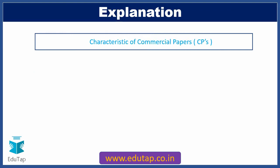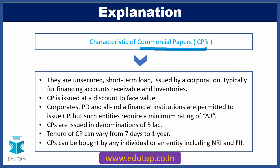Let's learn about the characteristics of commercial papers (CPs). They are unsecured — not protected by any collateral — and are short-term loans with a maturity period of less than one year, issued by corporate entities typically for financing accounts receivable and inventories. Here, accounts receivable can be used interchangeably with outstanding invoices. CPs are issued at a discount to their face value, similar to zero coupon bonds. Corporates, primary dealers, and all-India financial institutions are permitted to issue commercial papers, but require a minimum rating of A3 from Credit Rating Agencies (CRAs) duly registered by SEBI.